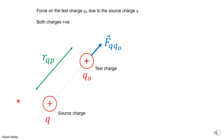We defined what the electric field was at a point in space. Now let's find an expression for the electric field due to a single point charge Q. To get the field at a given point, we need to bring a test charge Q₀ — these are point charges with no size to them. We put Q₀ at the point where we want to find the field, measure the force, divide by Q₀, and that gives us the electric field at that point.